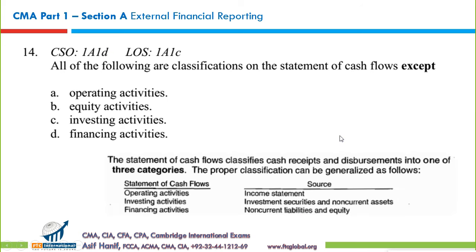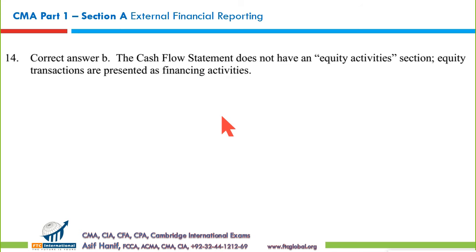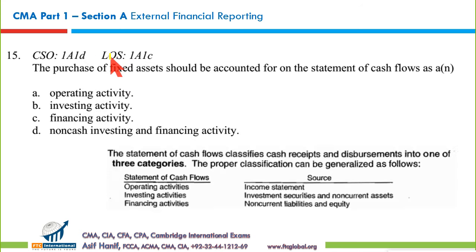Question 14: All of the following are classifications on the statement of cash flows except... Cash flows are separated into three categories: operating, investing, and financing. There is no classification called 'equity activities' — that is a nonsensical term. So B is the right answer.